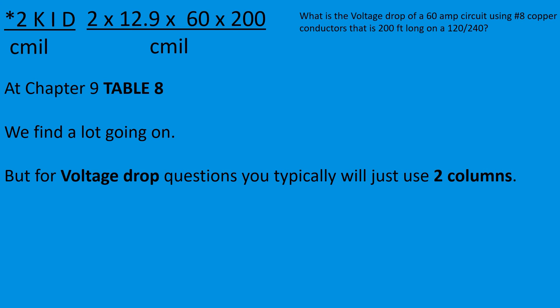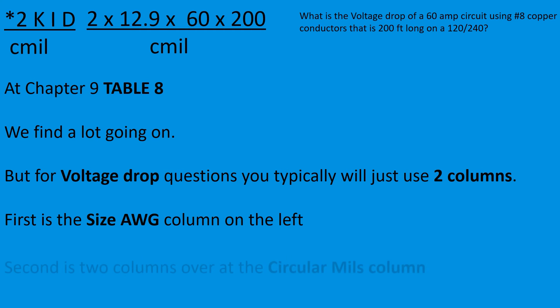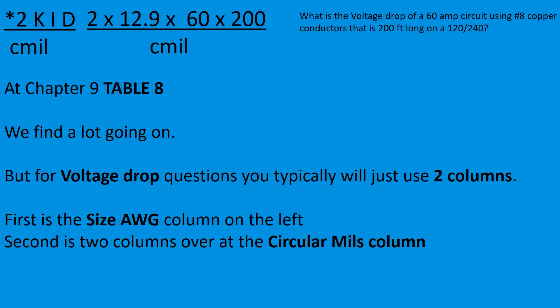For voltage drop questions you typically just use two different columns. The first one is the size AWG column on the left. That's going to be your size wire. So first select your size wire. We're using a number 8 copper. Second is two columns over, it's in the circular mils column. So go two columns over. Make sure you're in the cmils column. I want you to highlight both of these columns all the way down. So highlight the wire size, and then skip a column, skip over two columns, and you're going to use the circular mils column and highlight it all the way down.